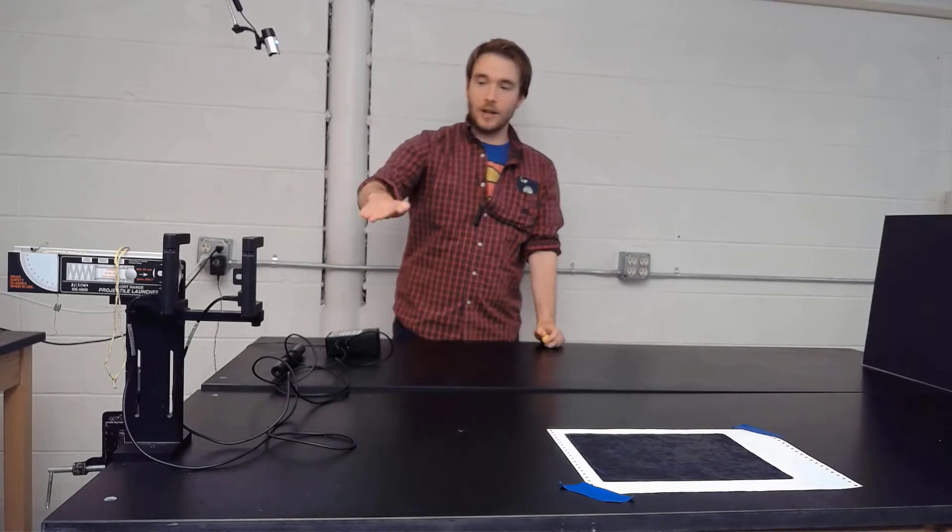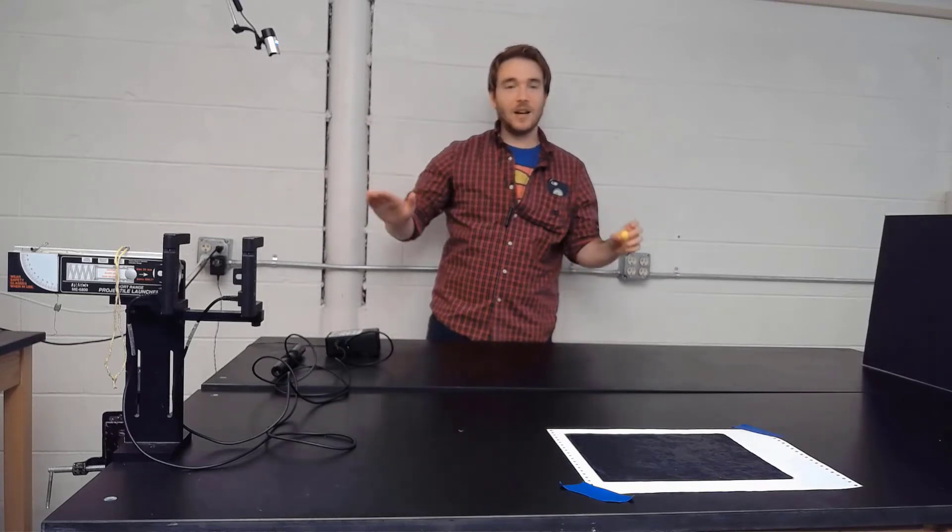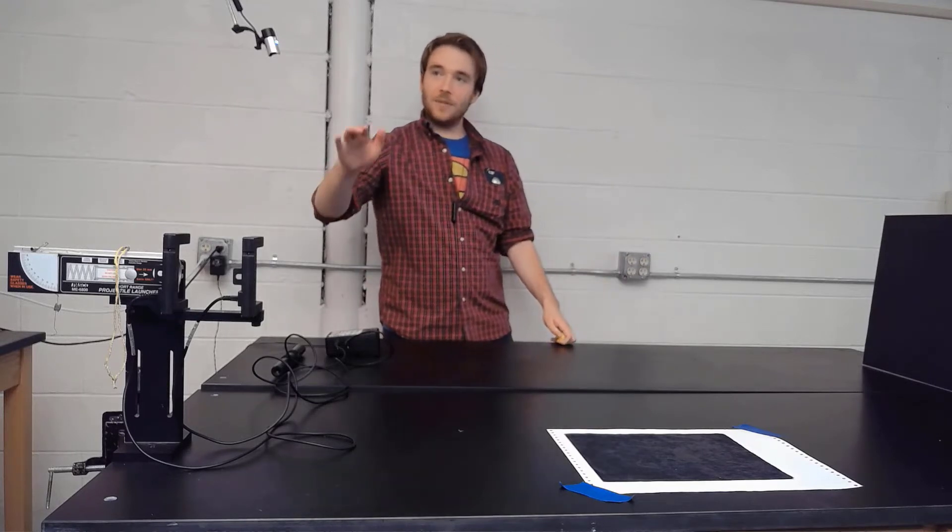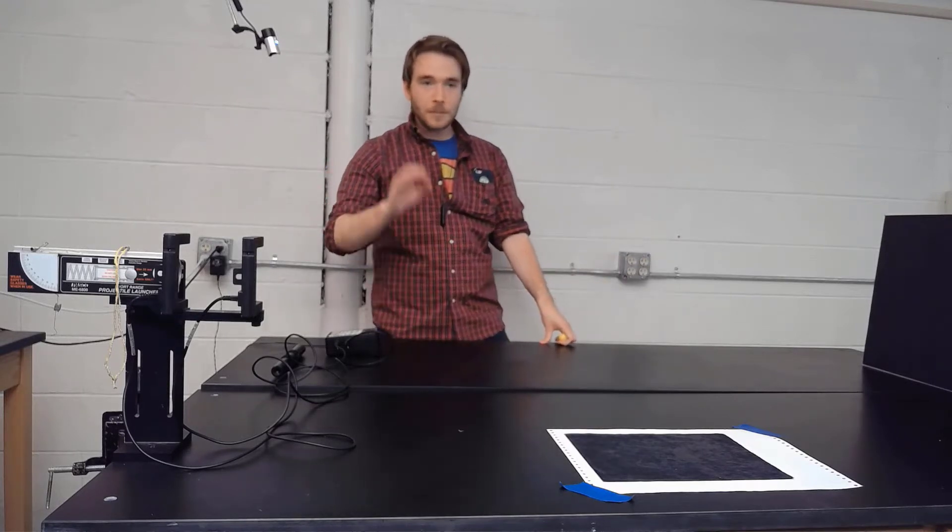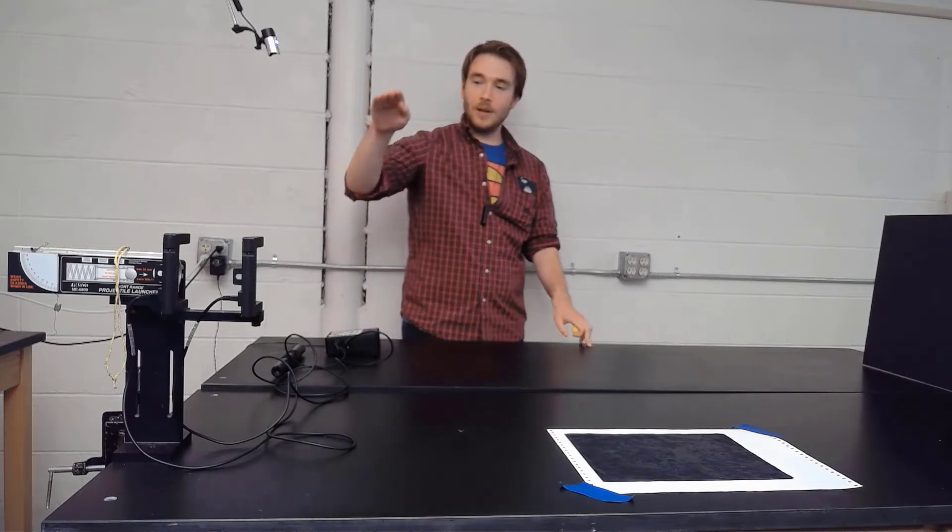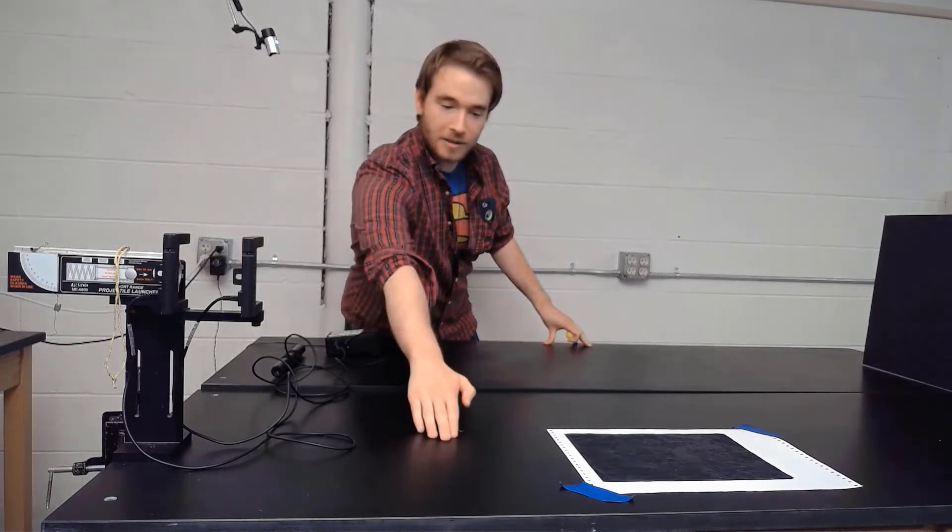And if we know how tall it is, we know that it doesn't have any kind of initial velocity in the Y direction. So using its height and the fact that we already know the acceleration, we can calculate how long it should take for the ball to get from this height down to the tabletop.